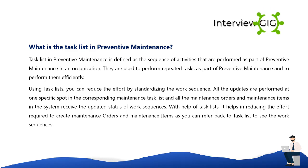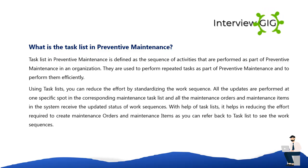A task list in preventive maintenance is defined as the sequence of activities performed as part of preventive maintenance in an organization. Task lists are used to perform repeated tasks efficiently. Using task lists, you can reduce effort by standardizing the work sequence — all updates are performed at one specific spot in the corresponding maintenance task list, and all maintenance orders and maintenance items in the system receive the updated status of work sequences.